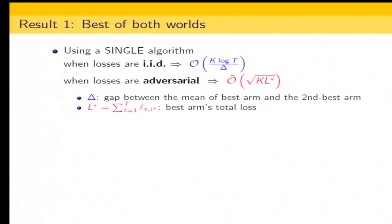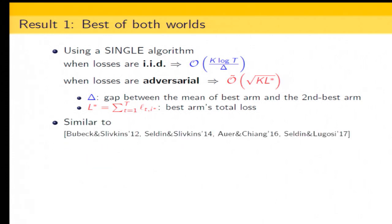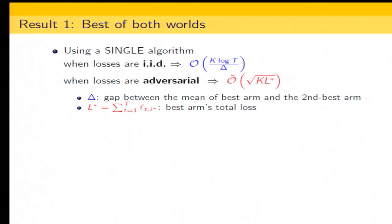Our first result is called the best of both worlds. The easiness is captured by the IID assumption. We have a single algorithm that, when losses are IID generated, has a regret bound that is logarithmic in T — more precisely, of order K log T over delta, where delta is the gap between the means of the best arm and the second best arm. When the losses are adversarial, we have a regret bound of roughly square root of K times L-star, where L-star is the accumulated loss of the best arm. This K L-star term is smaller than square root K T.